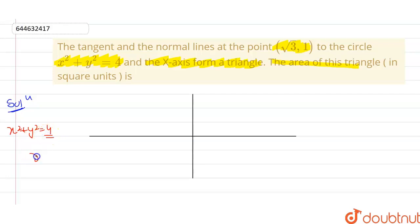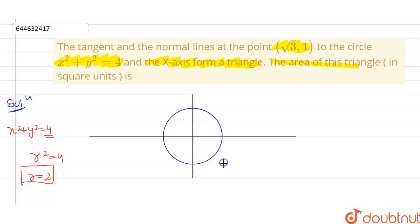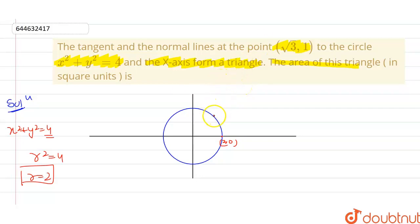From the equation x² + y² = 4, I can see that r² = 4, so the radius is 2. If I draw this circle on the coordinate axis, it has center (0,0) and radius 2, so the point (2,0) is on the circle. There is a point (√3, 1) somewhere on this circle — let's call it point P.